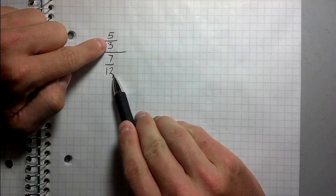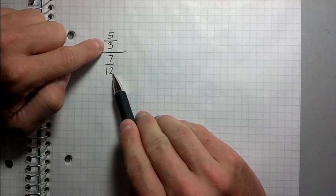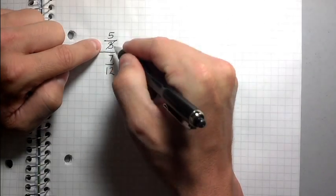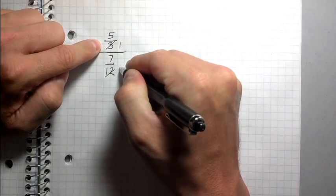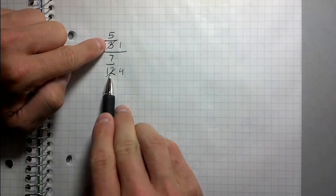So for example, you see how three and 12 have a common factor of three. What that means is I can cross this off and cross this off. This becomes a one and this becomes a four because three twelfths is the same as one fourth.